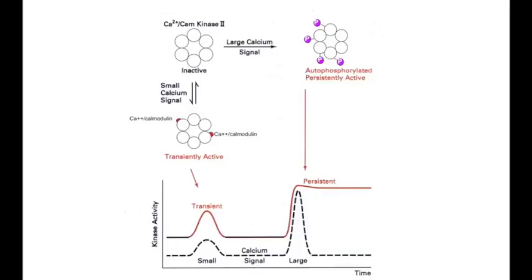In summary, the structure of CAM kinase 2 explains why small calcium signals generate only a short-lived transient activation of CAM kinase 2. This transient activity, coupled with the more effective dephosphorylating actions of calcineurin, explains why small calcium signals generate long-term depression. In contrast, the structural features of CAM kinase 2 also explain why autophosphorylation of neighboring subunits occurs with large calcium signals. The autophosphorylation allows the kinase to remain active long after calcium is removed, which also terminates calcineurin activity. With large calcium signals, the kinase exerts its effects for a prolonged period and without the competitive dephosphorylating effects of calcineurin.